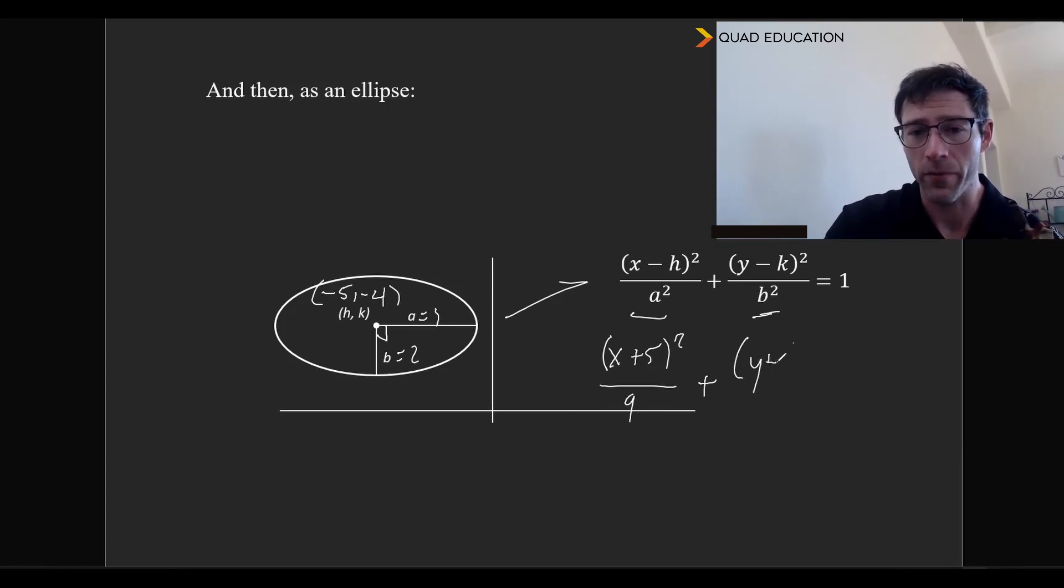And then plus (y + 4)² and that would be our numerator there, all over two squared, which is four, and that's going to equal one. And so this is most of what we have to do for ellipse questions on the ACT. They never get that complicated.